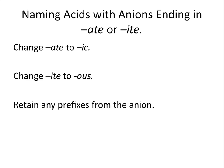Now let's talk about naming acids containing anions ending in -ATE or -ITE. If the anion in the acid ends with -ATE, you change the -ATE ending to -IC. And if the anion in the acid ends with -ITE, you change the -ITE ending to -US. We do this while retaining any prefixes from the name of the anion.